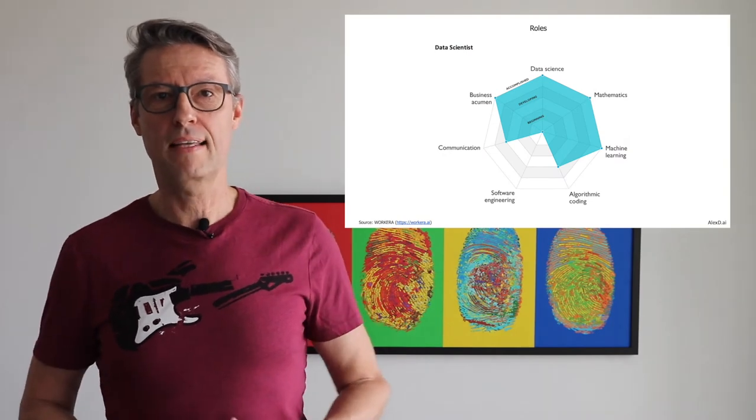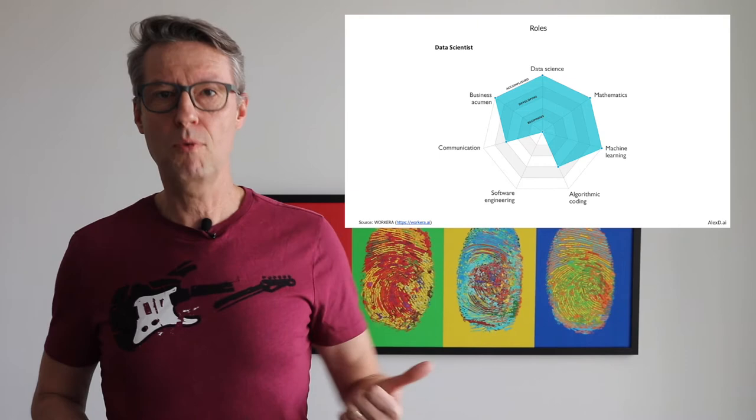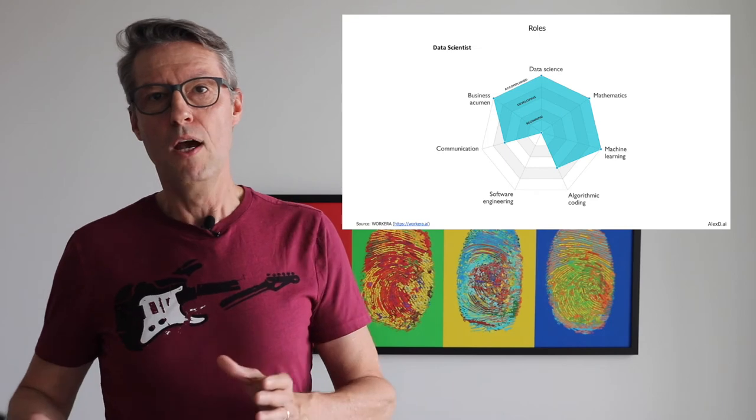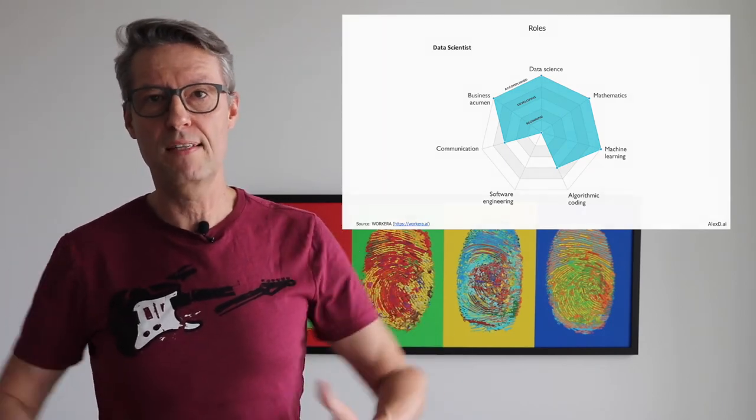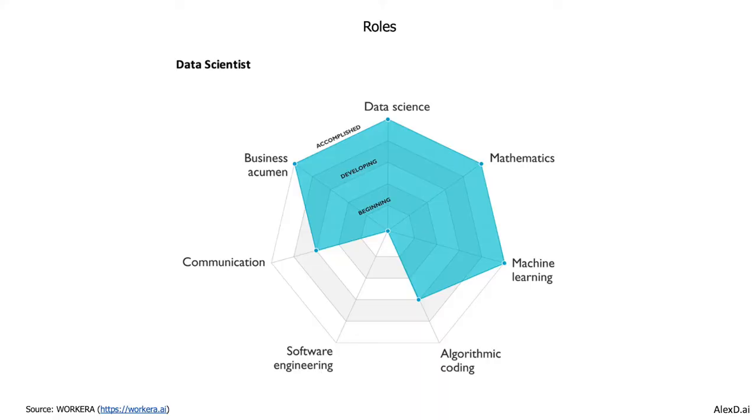It's very important to have data science because they are the ones that have to combine business acumen, understand the business, and have profound skills in data science, mathematics, and machine learning. They're the ones that will probably be involved in all phases of a project: from the beginning when you define a situation, when you deal with and analyze the data and prepare the data, when you build your models, and then to communicate and measure and evaluate the results of your project. For that reason, data science is also a very important role, but unfortunately it's a role that needs to have lots of different skills in a very deep way.